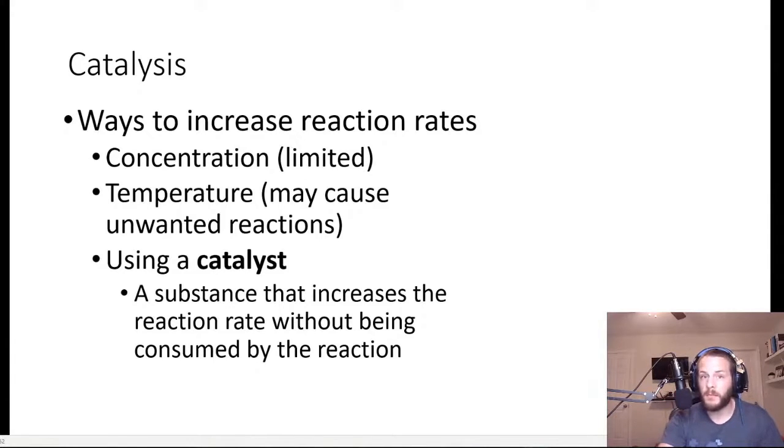And then there's temperature. When we talked about the Arrhenius equation, we understood that increasing the temperature increases the reaction rate because it increases the rate constant. And there's also limits to how hot you can get the reaction mixture too. If you get it too hot, you might start getting some undesired reactions. The molecules that you want to keep intact might start breaking apart. So there's a third way by which we can increase the rate of the reaction, and that is by using what's called a catalyst.